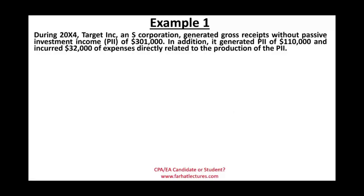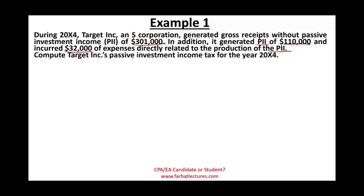First example: During 20X4, Target, an S-Corp, generated gross receipts without passive income of $301,000. In addition, it generated passive investment income of $110,000 and incurred $32,000 of expenses directly related to the production of passive investment income — such as interest expense on borrowed money to invest, or a management fee paid to manage the investments.